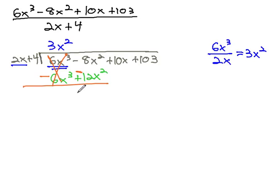Negative 8x squared and negative 12x squared is negative 20x squared. Just as with standard long division, our next step is to move down the positive 10x and repeat the process.